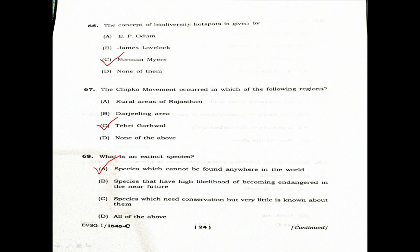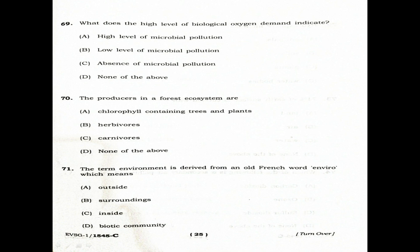Question 69: What does a high level of Biological Oxygen Demand (BOD) indicate? Option A: High level of microbial pollution. Option B: Low level of microbial pollution. Option C: Absence of microbial pollution. Option D: None of the above. The correct answer is Option A — high level of microbial pollution, indicating organic pollution.